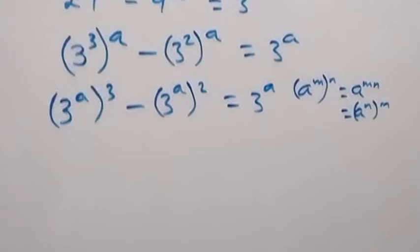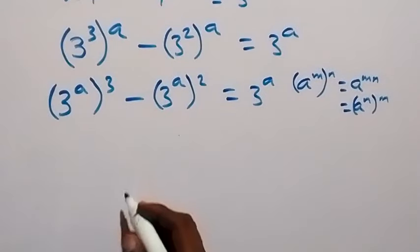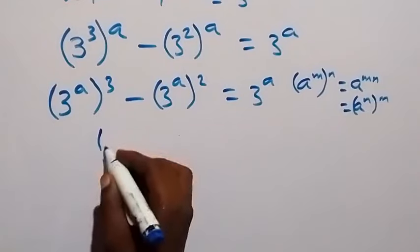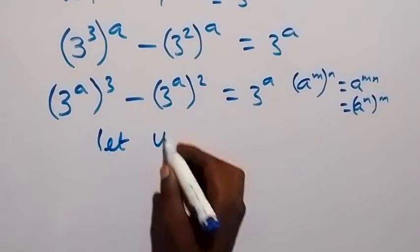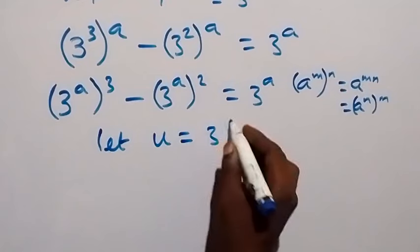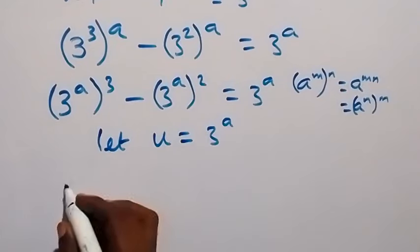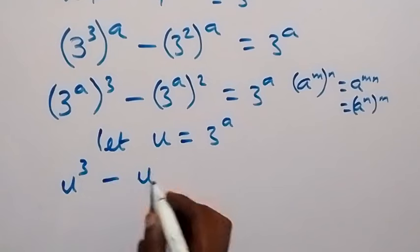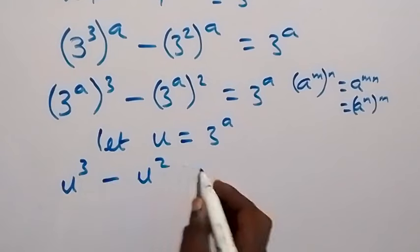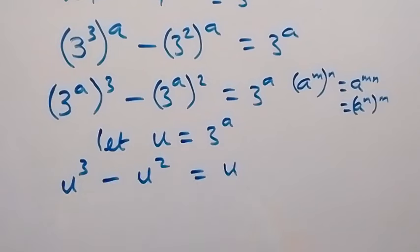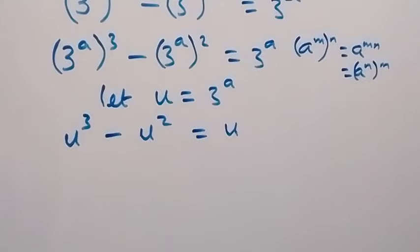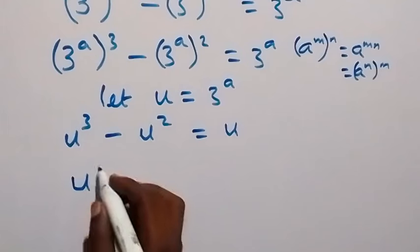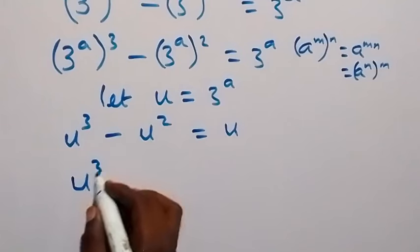From here, 3 raised to power a is common, so let's use a letter to represent that. Let u equal 3 raised to power a. This equation then becomes u cubed minus u squared equals to u.